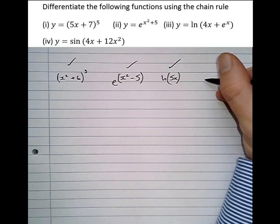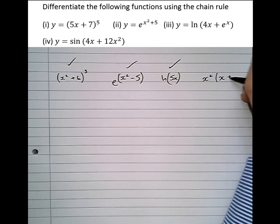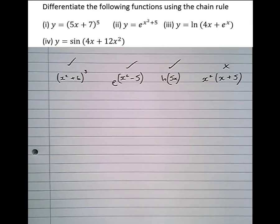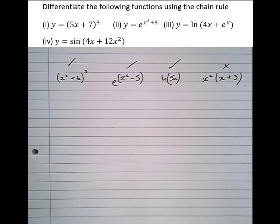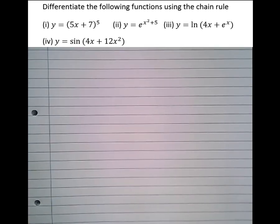An example of something that's not a function of a function is taking x squared and multiplying it by x plus 5. That's a function multiplied by another function, so the chain rule doesn't apply in that case. The chain rule only applies to functions of functions — where we've taken a function and wrapped another function around it.